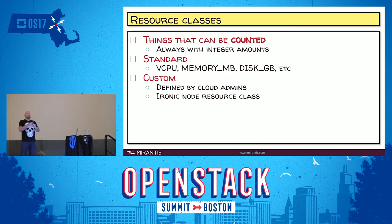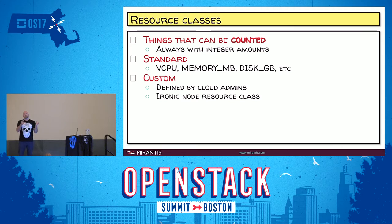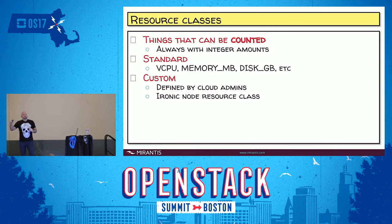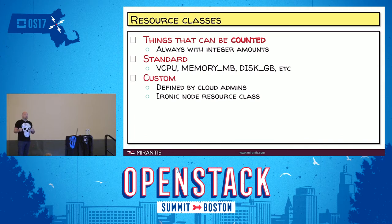Anything prefixed with custom underscore is a custom resource class. An example of custom resource classes would be Ironic — in Newton, Ironic's GET nodes response includes a resource class field indicating the custom resource class that represents that class of hardware. That's an example of a custom resource class. They can be defined by cloud admins. The custom resource classes we're currently working on integrating are the Ironic ones.